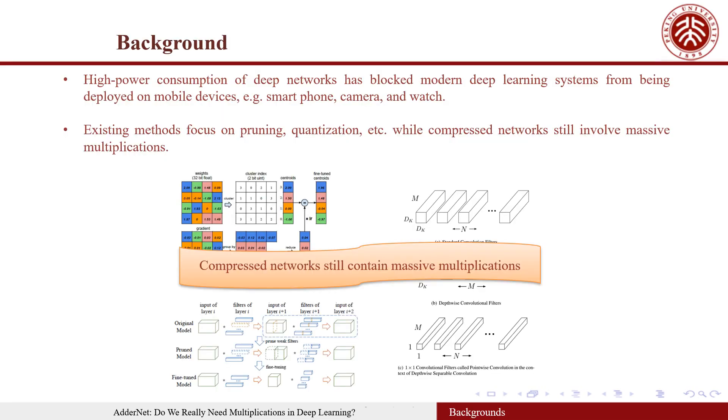High-power consumption of deep networks has blocked modern deep learning systems from being deployed on mobile devices. Existing model compression methods focus on pruning, quantization, and so on. However, the compressed networks using these methods still contain massive multiplications, which would cause large energy consumption.